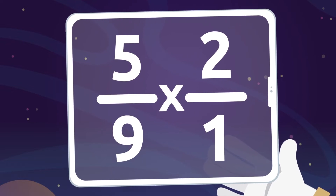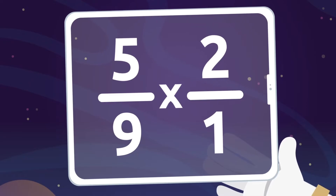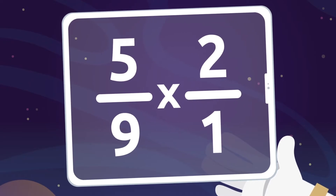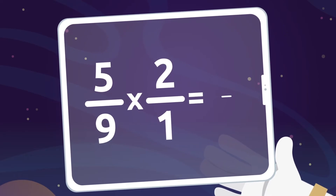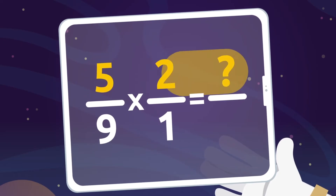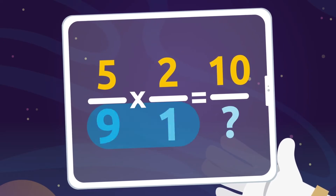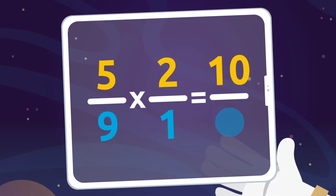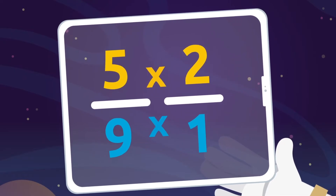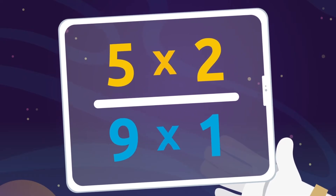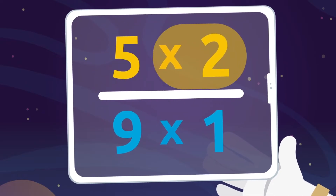Do you know how to multiply fractions? It's really easy — pay close attention. To find the numerator, we multiply the numerators. To find the denominator, we multiply the denominators. This means that to multiply fractions, we multiply the two numerators together and the two denominators together.